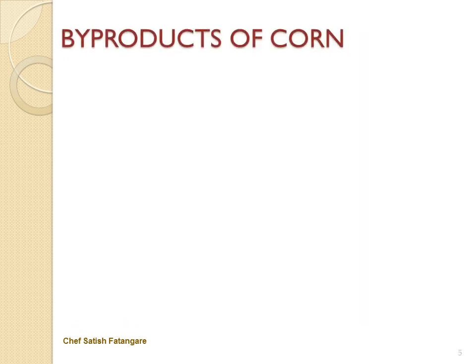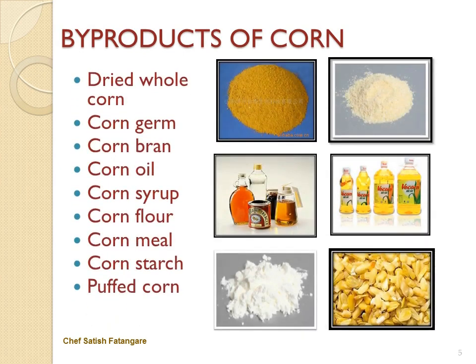In this slide we will discuss about the byproducts of corn. The byproducts of corn are dried whole corn, corn germ, corn bran, corn oil, corn syrup, corn flour, cornmeal, corn starch, and puffed corn.